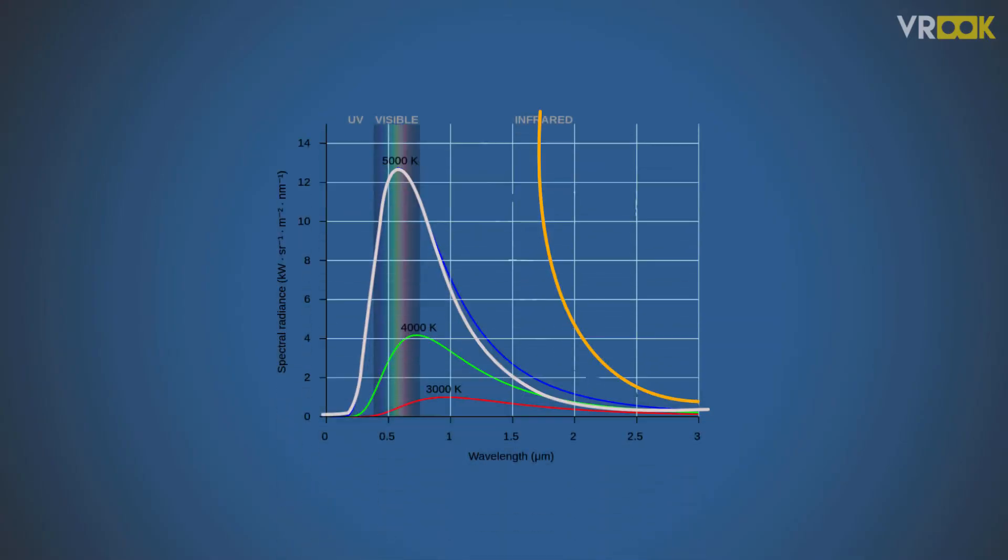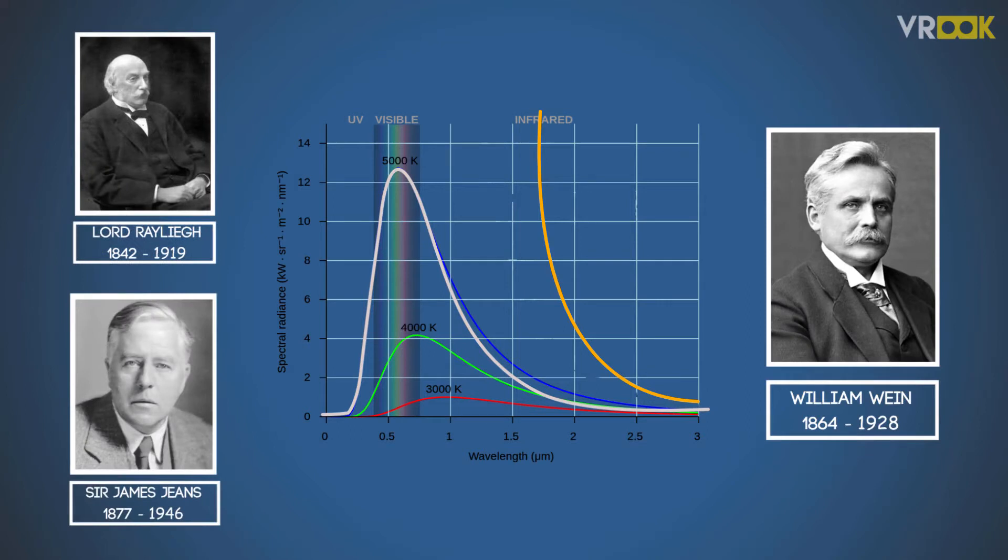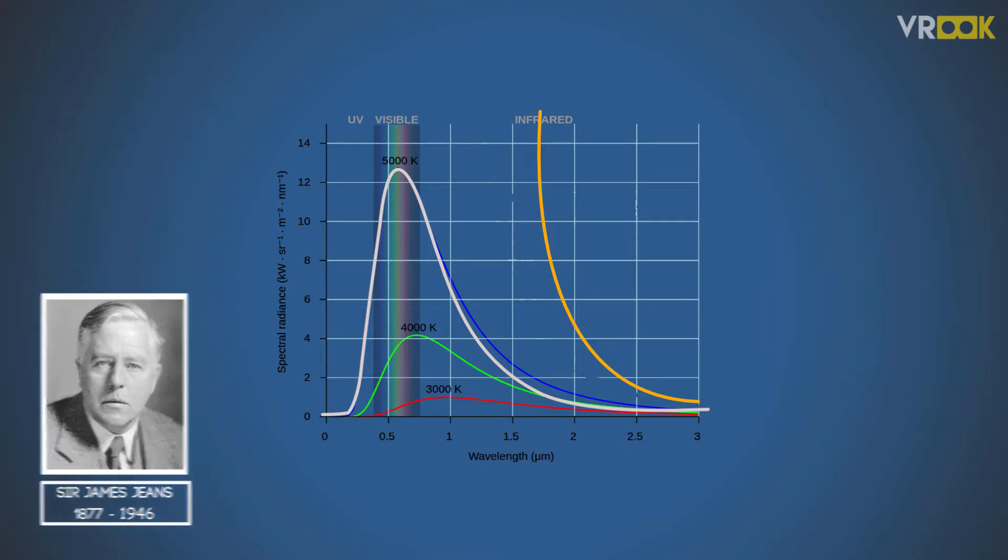In our last video, we saw that Rayleigh-Jean's law and Wien's displacement law failed to predict the blackbody radiation curve. This was the failure of classical physics or the notions that scientists had before the 19th century.